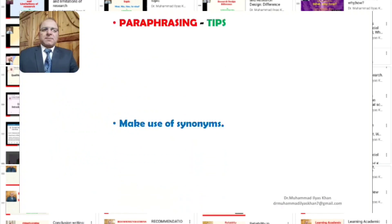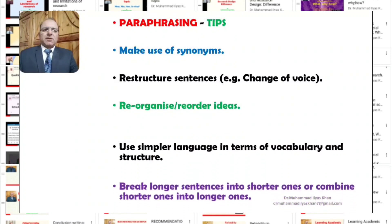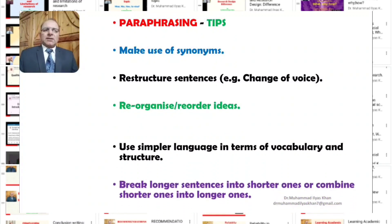Moving on to some tips related to paraphrasing — in other words, how can we do good paraphrasing? The things that help us include making use of synonyms. Generally, the use of synonyms is a good way of turning the target passage into our own words. But remember that just synonyms is not enough — there should be a balance, including restructuring sentences from the original text.